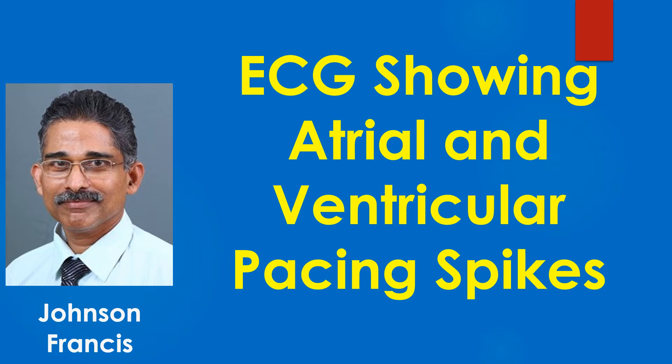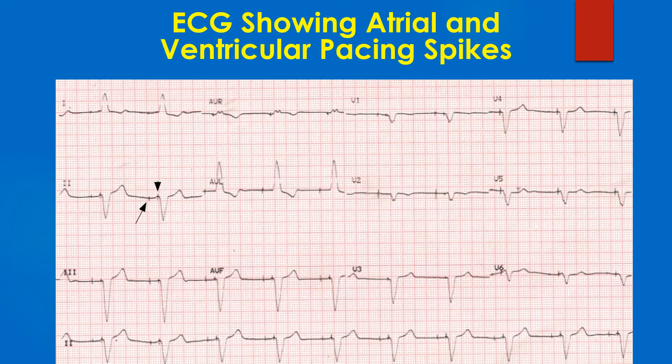An ECG showing atrial and ventricular pacing spikes indicating dual chamber AV sequential pacing is discussed here. The atrial pacing spike has been marked with a long arrow and the ventricular pacing spike with a short arrow.